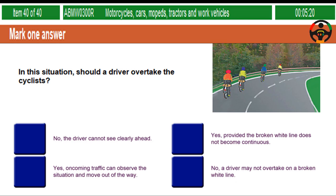In this situation, should a driver overtake the cyclists? No, the driver cannot see clearly ahead. Yes, provided the broken white line does not become continuous. Yes, oncoming traffic can observe the situation and move out of the way. No, a driver may not overtake on a broken white line.